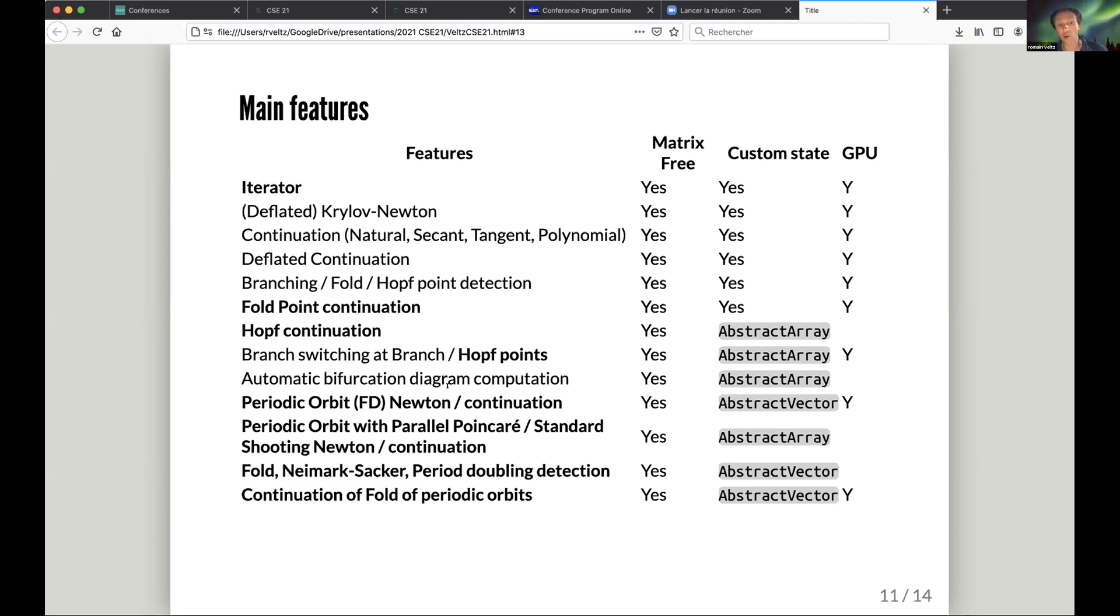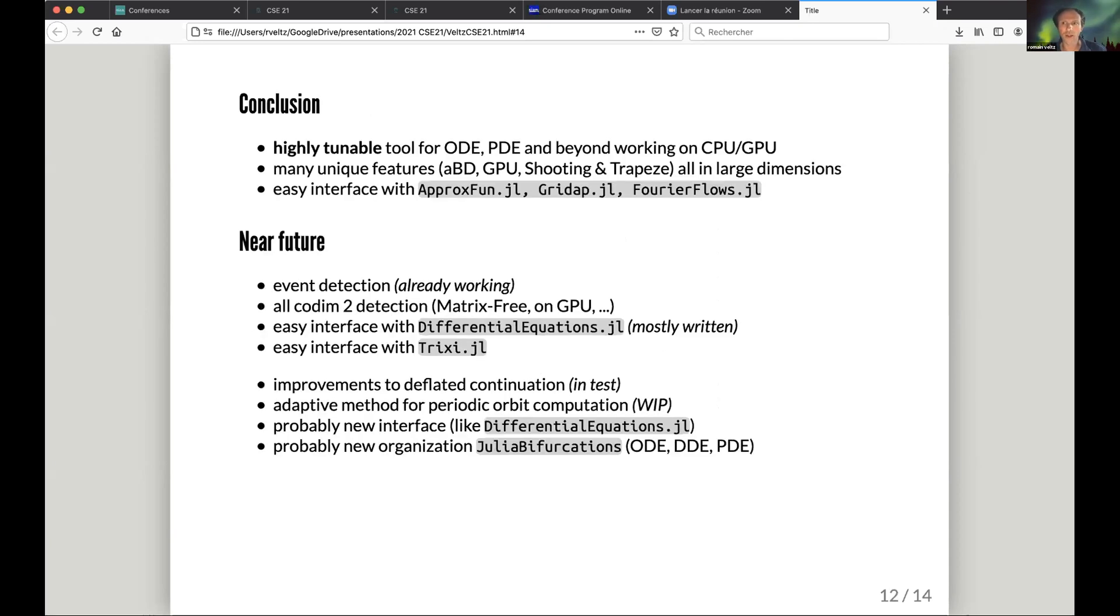To conclude, I think it's a highly tunable tool for ODEs and beyond, like non-local models I just presented. It works on CPU and GPU. I'd like to make it work on clusters. It has many unique features like automatic branch switching and bifurcation diagrams. It works on GPU. You have shooting, trapezoid methods, all in large dimensions. You won't find many software with all these features.